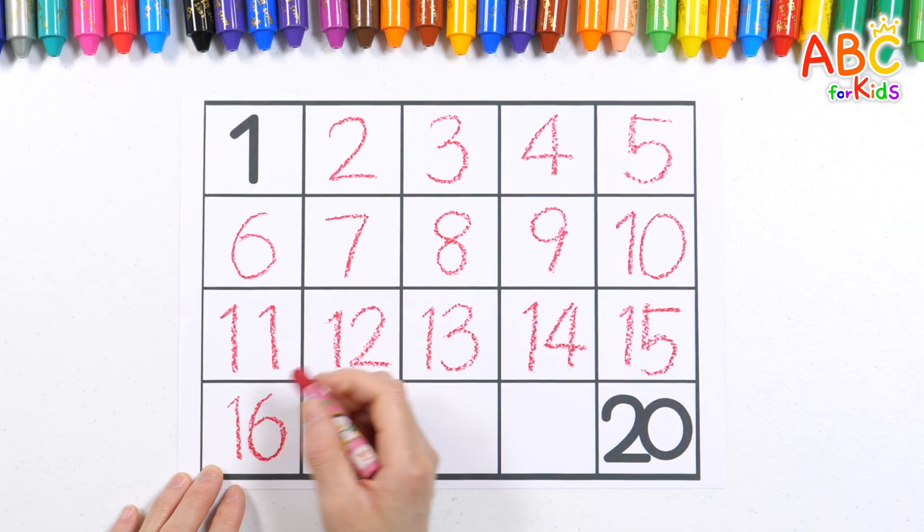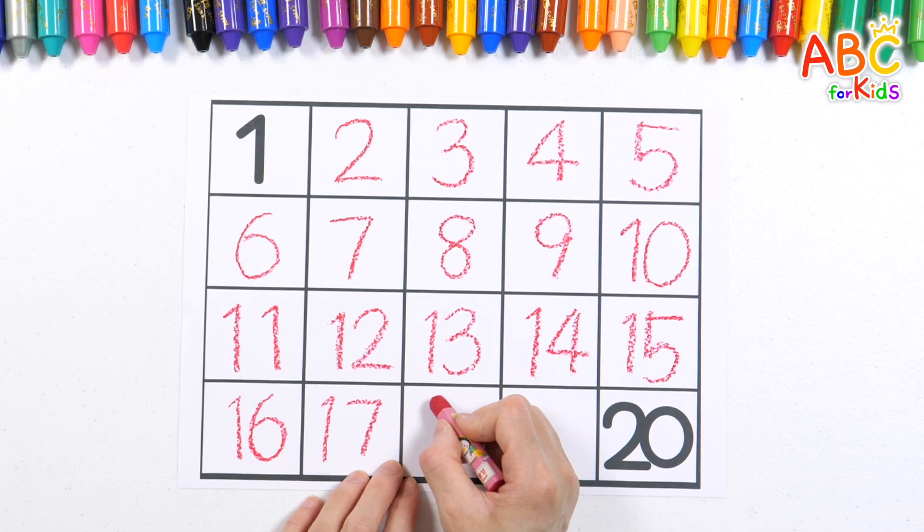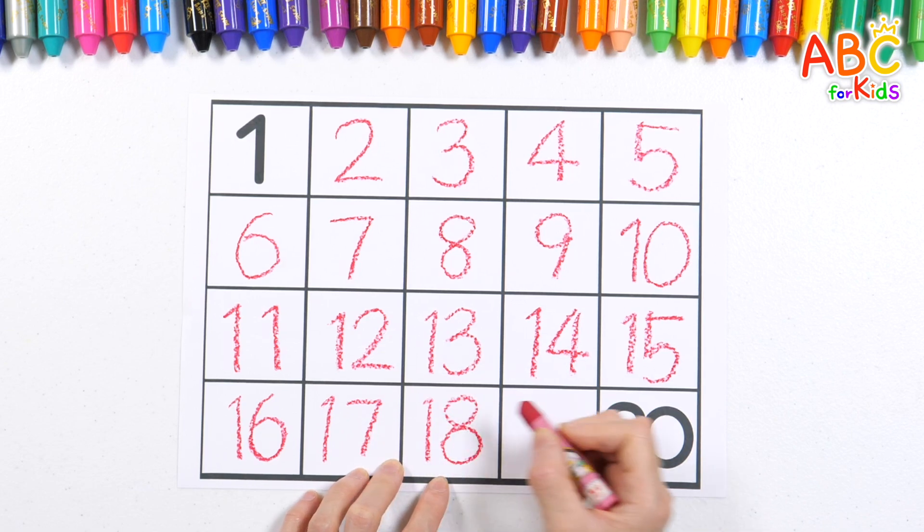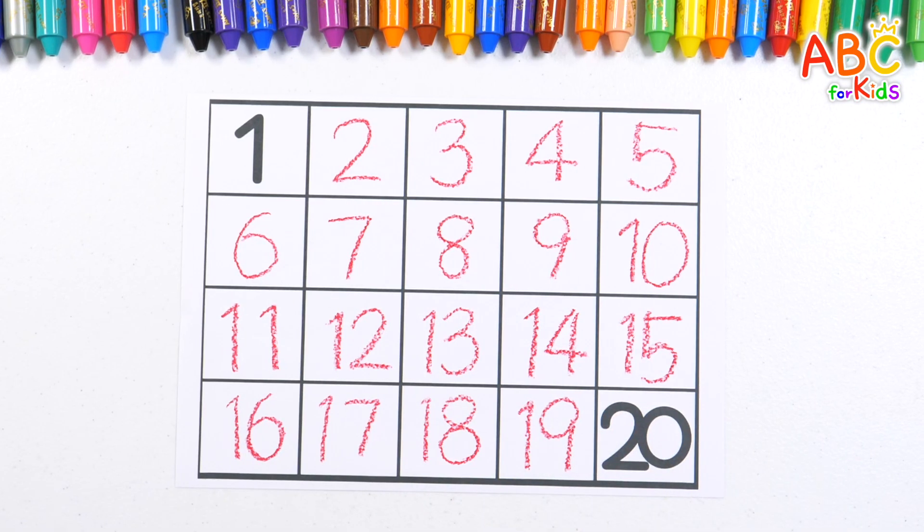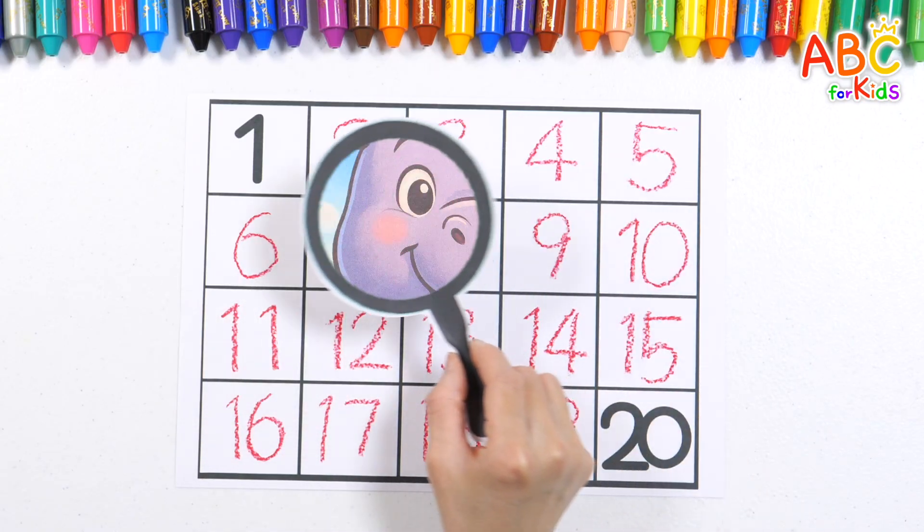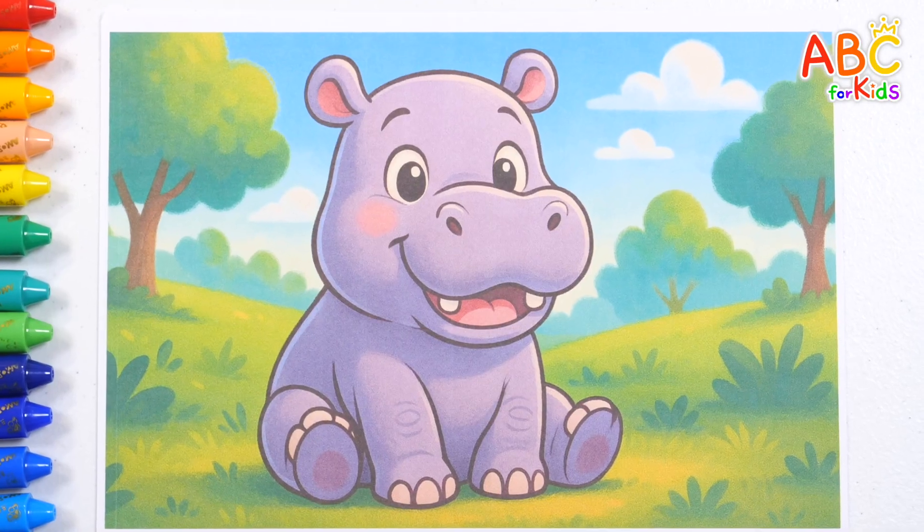15, 17, 18, 19, 20. Wow! Good job! What can you see behind the numbers? Here's a cute baby hippo.